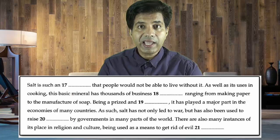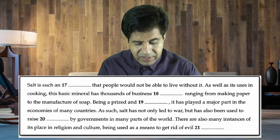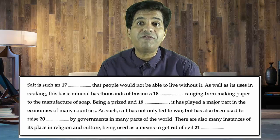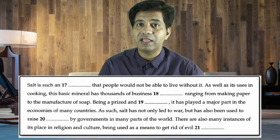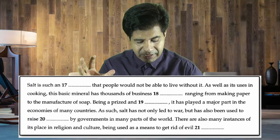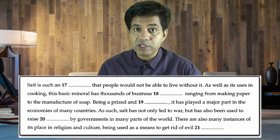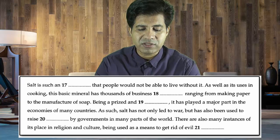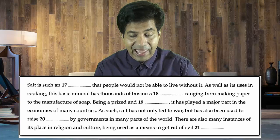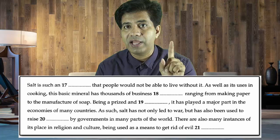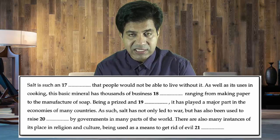Let's read this together. The first blank reads: 'Salt is such a dash that people would not be able to live without.' It could be 'ingredient,' 'item,' or 'thing' — we need the specific word used. Note that 'an' before the blank means the word starts with a vowel — A, E, I, O, or U — and it is going to be a noun.